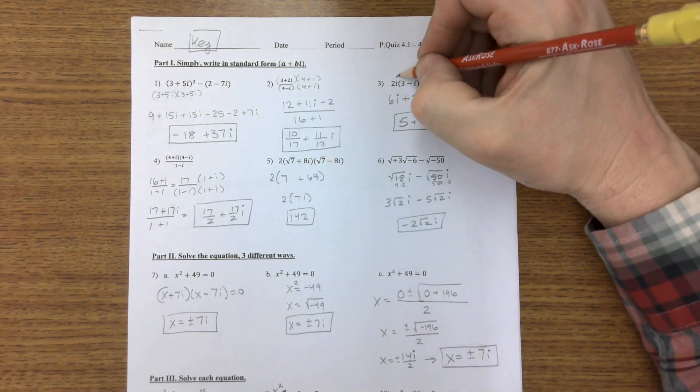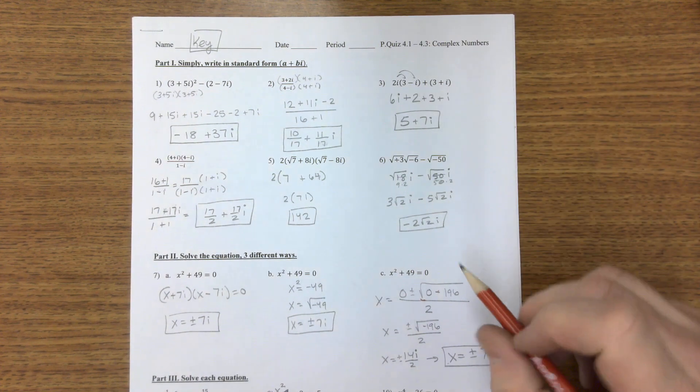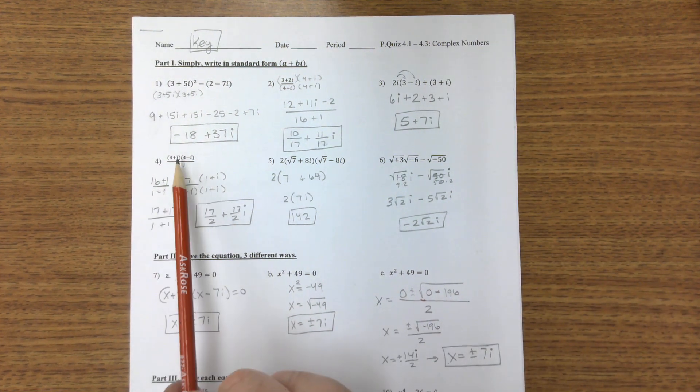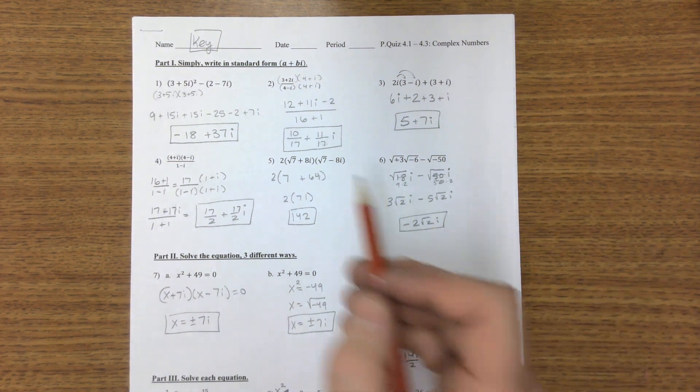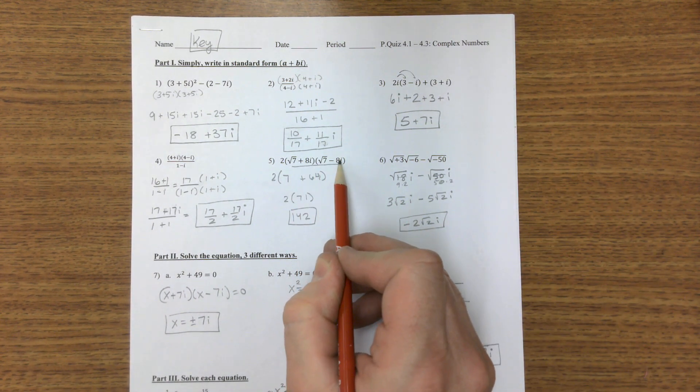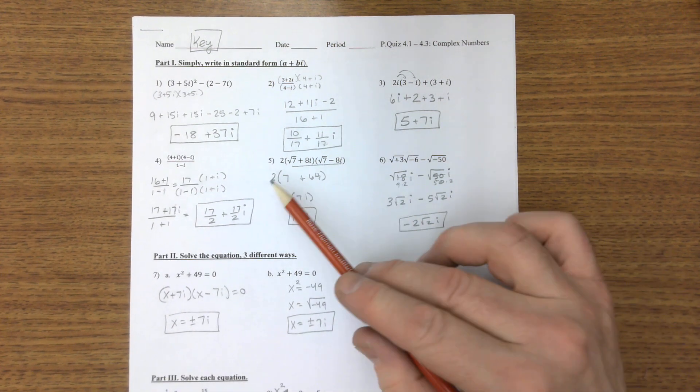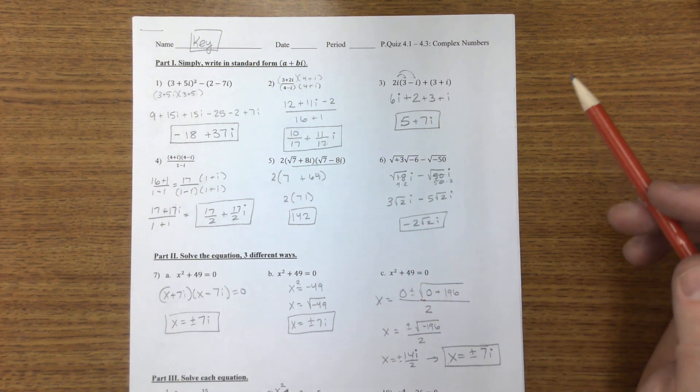On number three, distribute this in here and then add them up. On the top one, foil this first, then multiply by the conjugate. The last one, I chose to foil these together first and then distribute the 2 in there, but you could have distributed the 2.